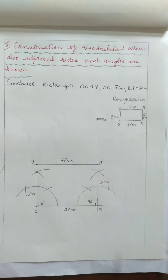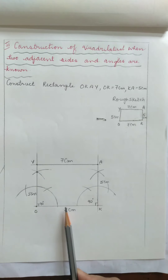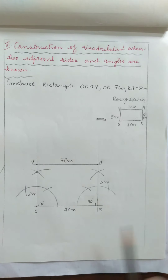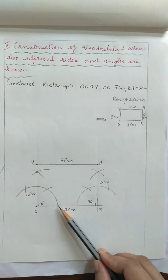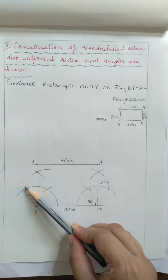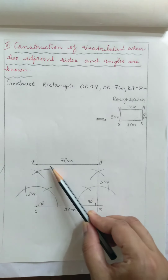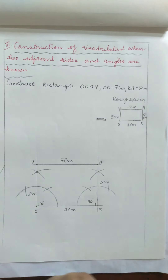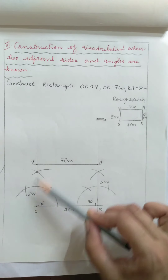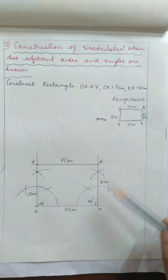This is how we draw 90 degrees without using the protractor, by using compass and scale. Take a measurement less than 7 cm in the compass, draw one arc, don't disturb the measurement, keep the compass and draw arcs from both arc points. Then take the measurement 5 cm on both sides, join the points, and you will get a rectangle. This is the method.